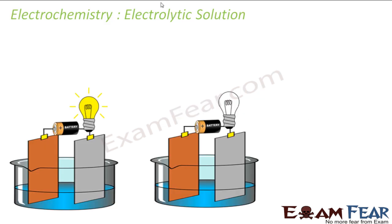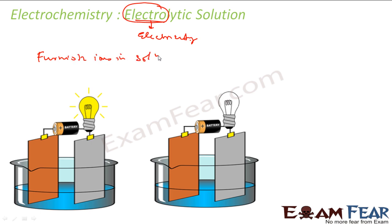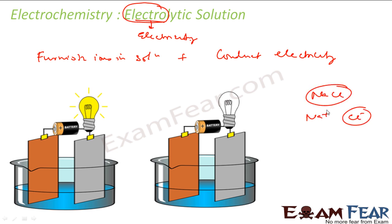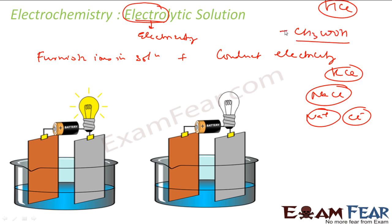Let's understand a very critical topic called electrolytic solution. A substance which furnishes ions in solution and conducts electricity is called an electrolyte. For example, NaCl put in water becomes Na⁺ and Cl⁻ ions, which conduct electricity. Other examples are KCl, HCl, and acetic acid — acetic acid in water gives CH₃COO⁻ and H⁺ ions.